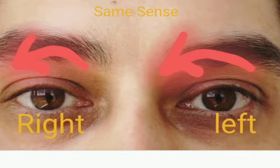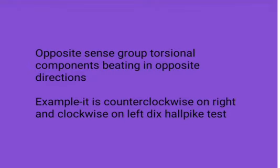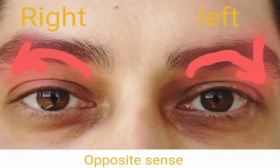When you have nystagmus on both sides, a useful thing which I found from literature was to determine based on the torsional component whether it is same sense nystagmus or different sense nystagmus.